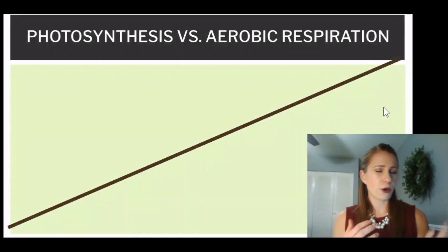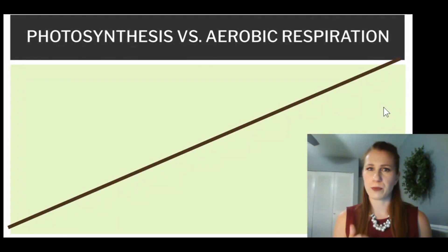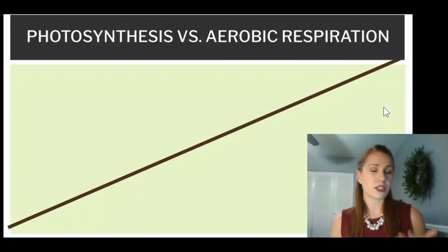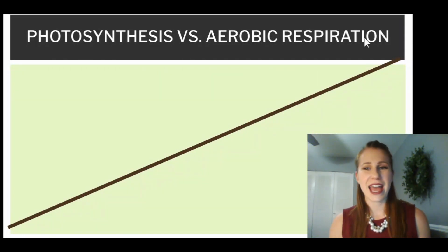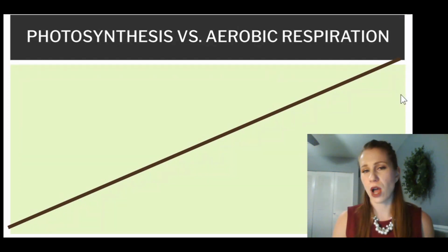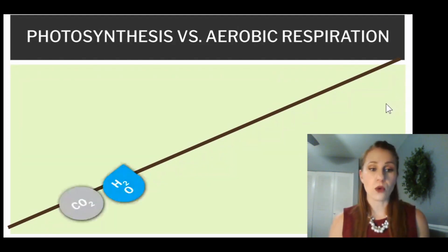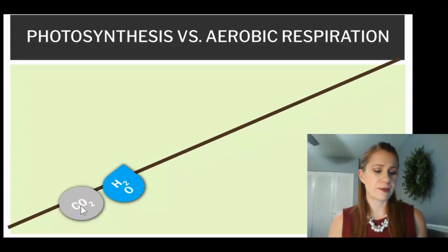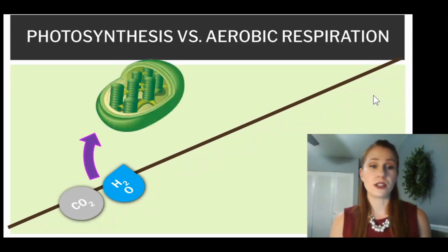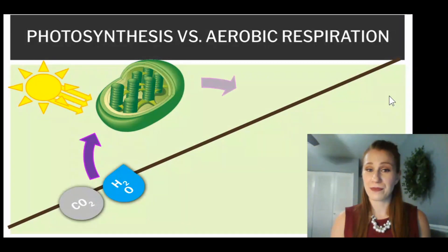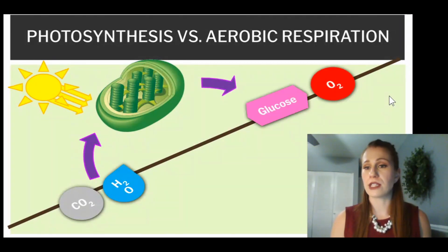Now let's quickly compare photosynthesis and aerobic respiration. Photosynthesis only happens in plant cells. Aerobic respiration happens in plant cells and animal cells — any type of cell that has mitochondria. In photosynthesis, we start with carbon dioxide and water. A plant is going to take in carbon dioxide and water and run that through their chloroplasts in the presence of sunlight to produce glucose and oxygen.